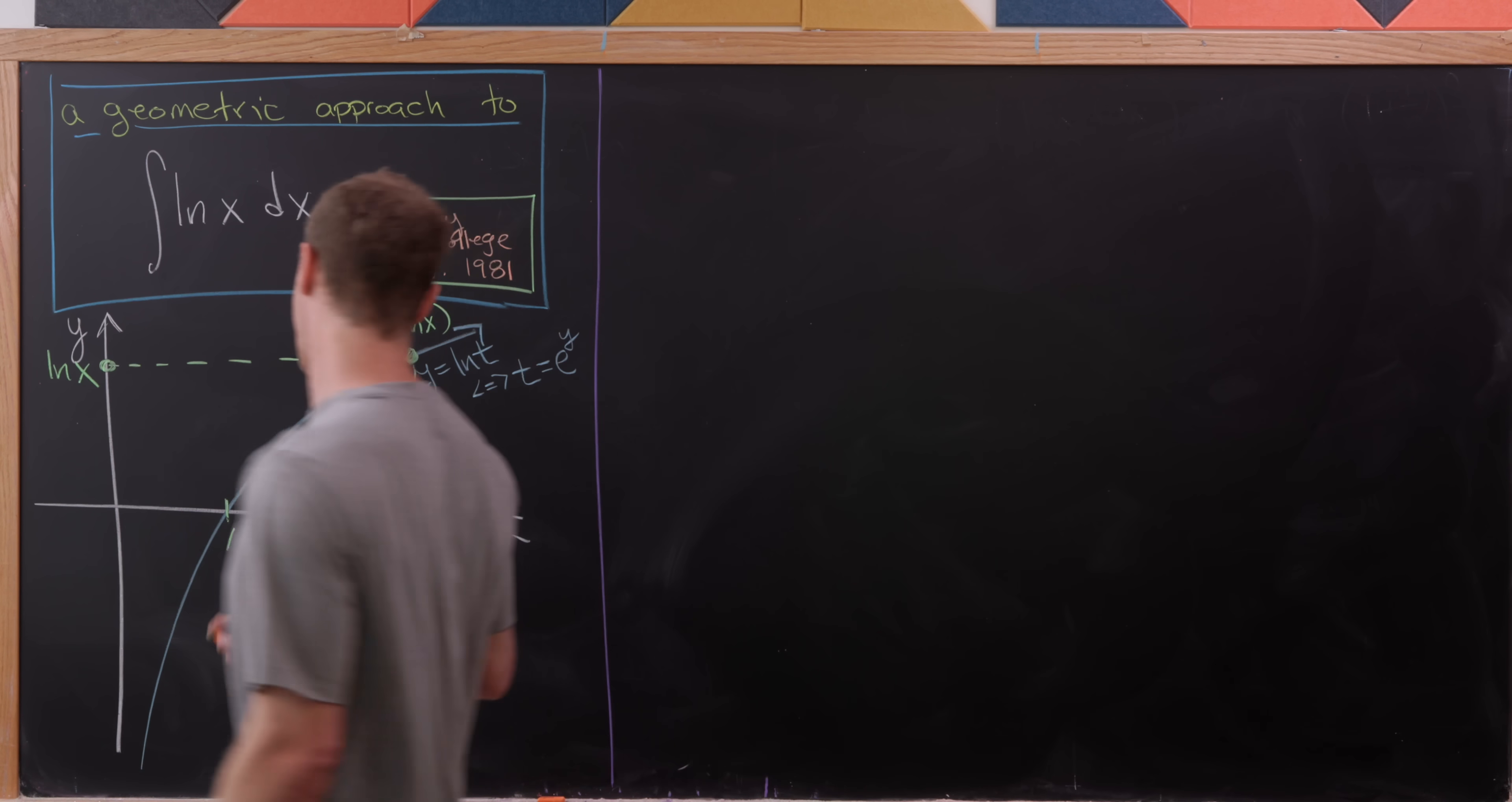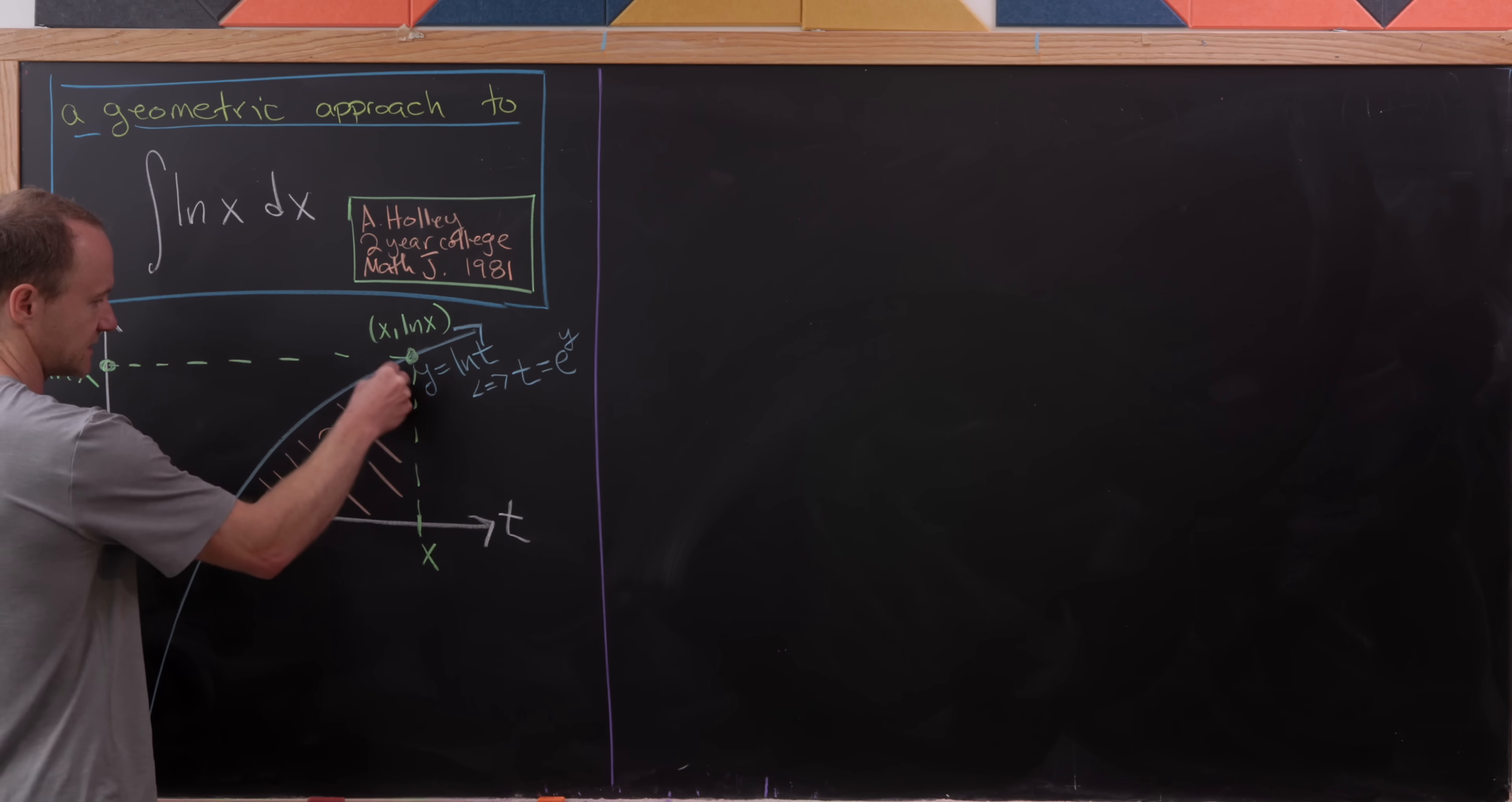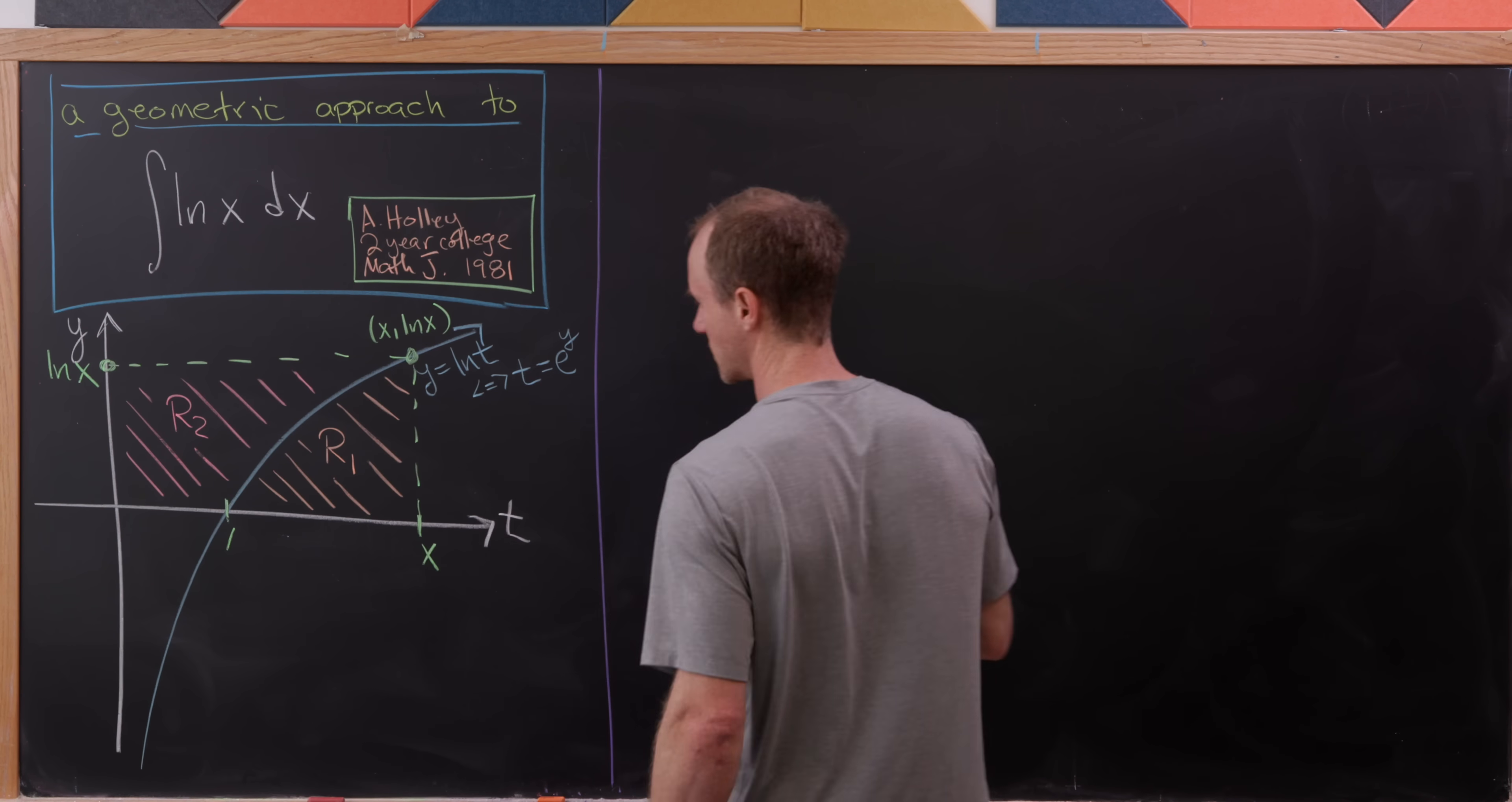I'm going to call this piece right here region 1, so I'll call that R1, and let's shade it in this peach color. And then we've got this other region over here that I'm going to call R2, and I'll shade that as well in this pink color. So now let's see where we can go from there.